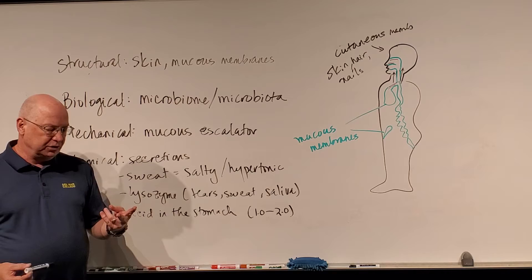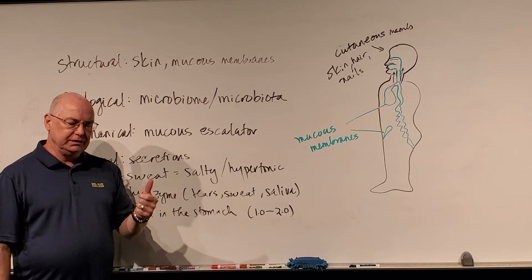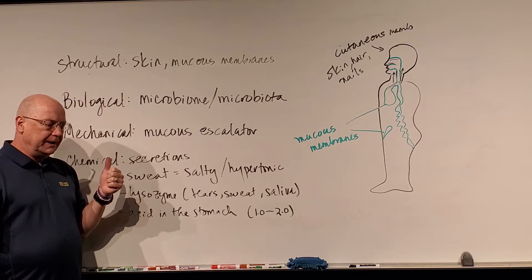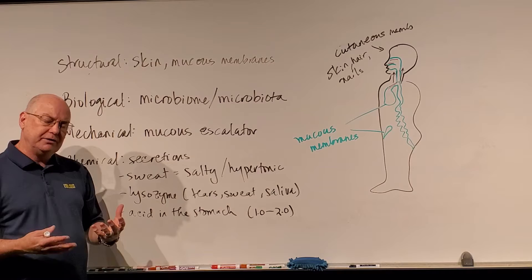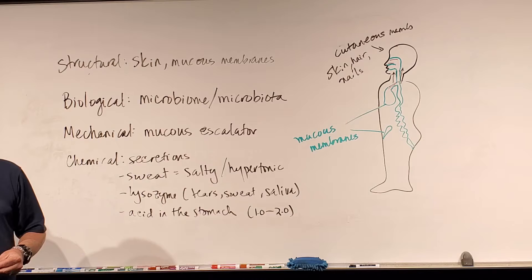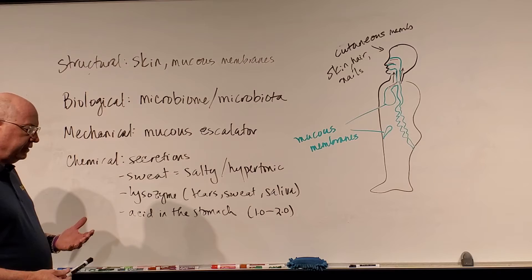Two other things to mention: bile in the digestive tract is extremely salty, making parts of our digestive tract inhospitable and hypertonic. Also, some of the fatty acids and oils secreted in our skin create somewhat of an acidic environment. Again, a lot of bacteria and pathogens don't like acidity.